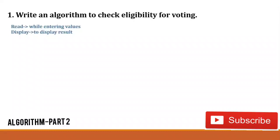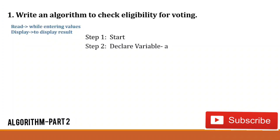The first step of any algorithm is start and the last step is stop. So in step one we start the algorithm. In step two we declare the variables. This program checks eligibility for voting, so we just need to enter the age — only one value. To store that value we need only one variable for storing the age of the candidate. I'll declare only one variable; the name of the variable is 'a'. In step three we enter the age using read with one variable, because we will enter only one value — the age — and that age will be stored in variable a.